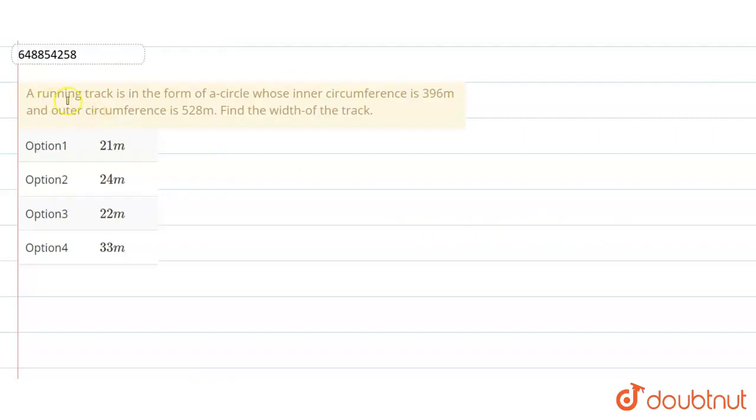Hello students, the question is: a running track is in the form of a circle whose inner circumference is 396m and the outer circumference is 528m. Find the width of the track.